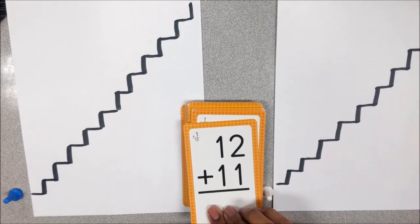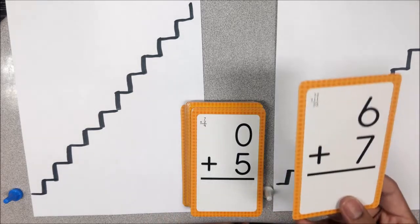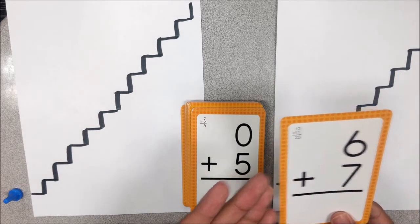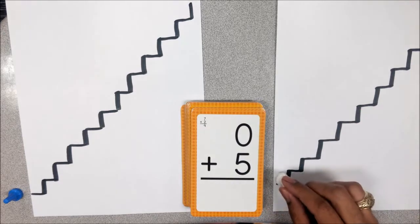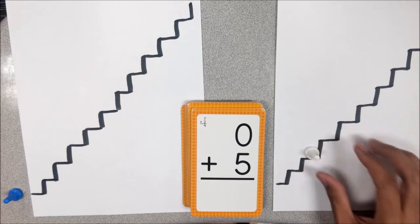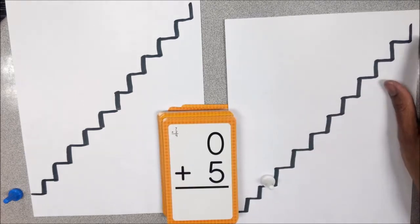How the game works is each player will take turns flipping a card over, answering the equation, and if they get it correct they get to move up a step. The first player to get to the top of the stairs first wins the game.